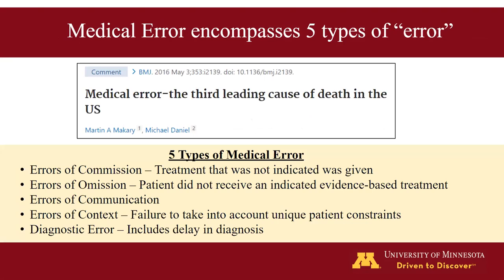When we talk about medical error, there are five different types. The first is an error of commission — when a patient gets a treatment that wasn't indicated. The next is an error of omission — when a patient doesn't get an evidence-based treatment. Then there's an error of communication, one of the most common, occurring when multiple services fail to communicate. An error of context is rarer — when the provider doesn't account for a unique patient situation, such as ordering a medication the patient can't afford.